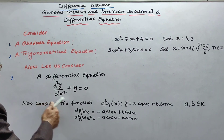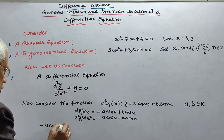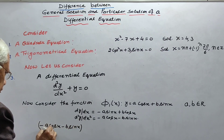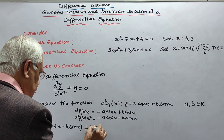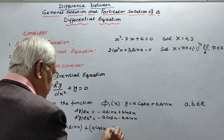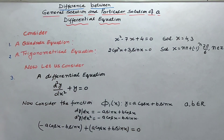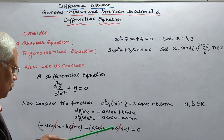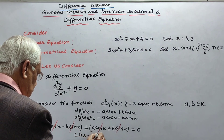In place of d²y/dx², we will write minus a cos x minus b sin x, plus in place of y we will write a cos x plus b sin x. This is equal to 0. Minus a cos x will be cancelled by plus a cos x, and minus b sin x will be cancelled by plus b sin x. So, 0 equals 0.